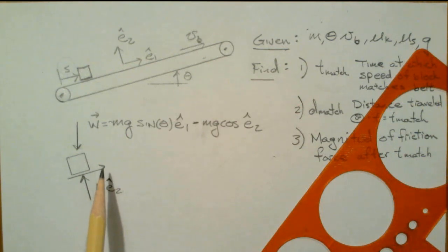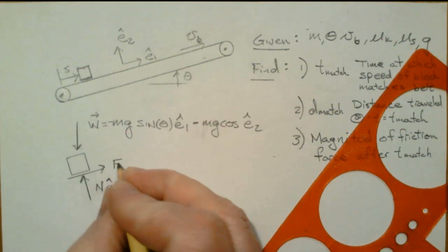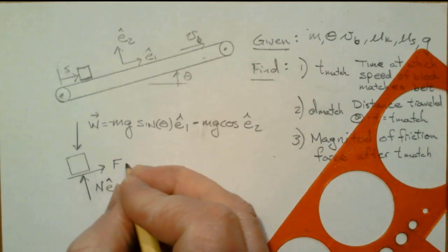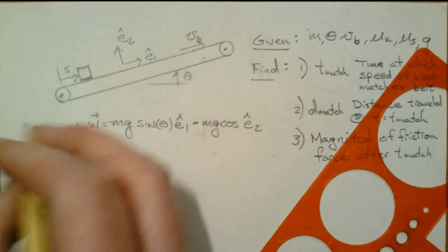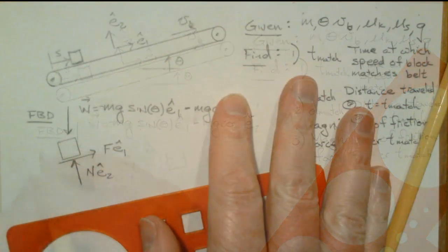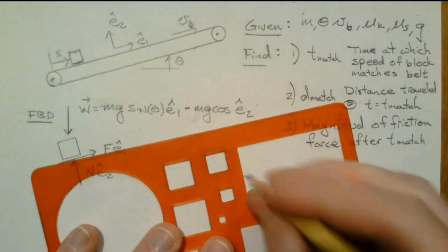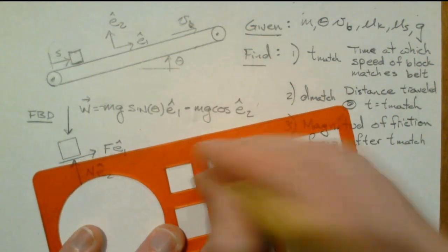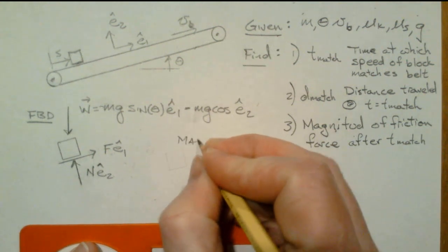That friction force has to go to the right; otherwise there's no way for the block to accelerate upward and to the right. So here's the friction force — I'll call it F — and it's going to be in the e-hat-1 direction. That completes the free body diagram. The next step is to draw a mass acceleration diagram, labeled MAD. The whole point of a mass acceleration diagram is to write the right-hand side of Newton's second law: mass times acceleration.